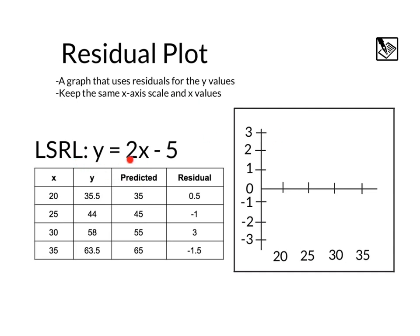Here we have an example with our least squares regression line. It looks like the table is already filled out by plugging in the x values to find the predicted values, and then finding the residual by subtracting the y values, the actual values minus the predicted value, giving us those residuals. We can see on our plot over here, we have the x-axis values of 20, 25, 30, and 35. That's from these x values.